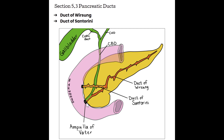Recall that at the ampulla of Vater we have the sphincter of Oddi — remember that it's the muscle that controls how the bile and pancreatic enzymes enter into the duodenum.